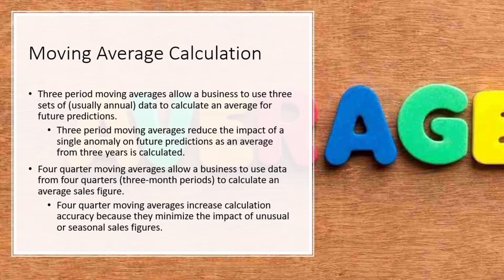Three-period moving averages allow a business to use three sets of, usually annual, data to calculate an average for future predictions. Three-period moving averages reduce the impact of a single anomaly on future predictions, as an average from three years is calculated.